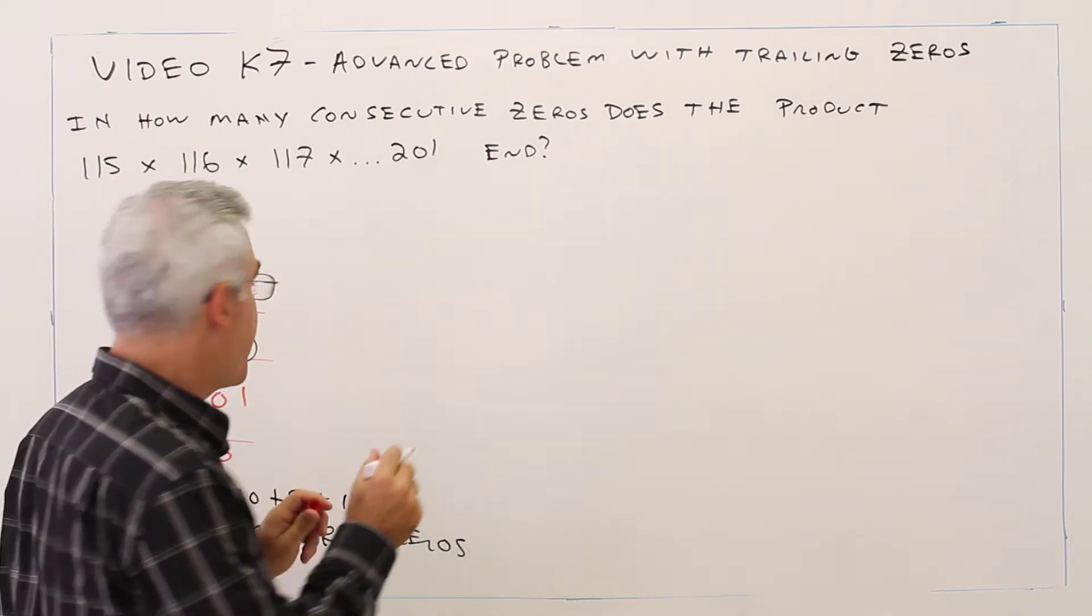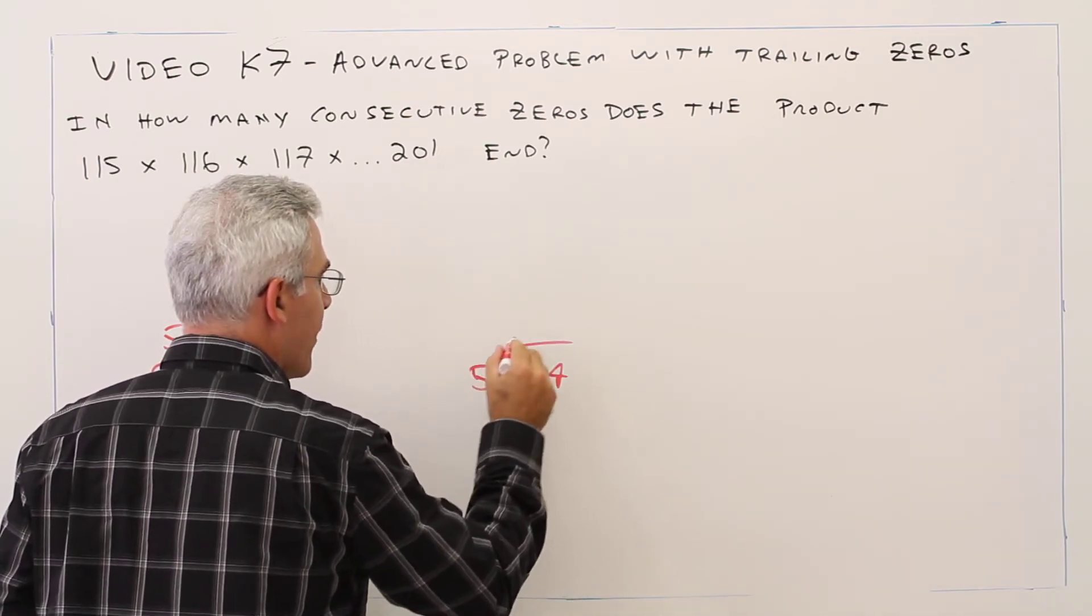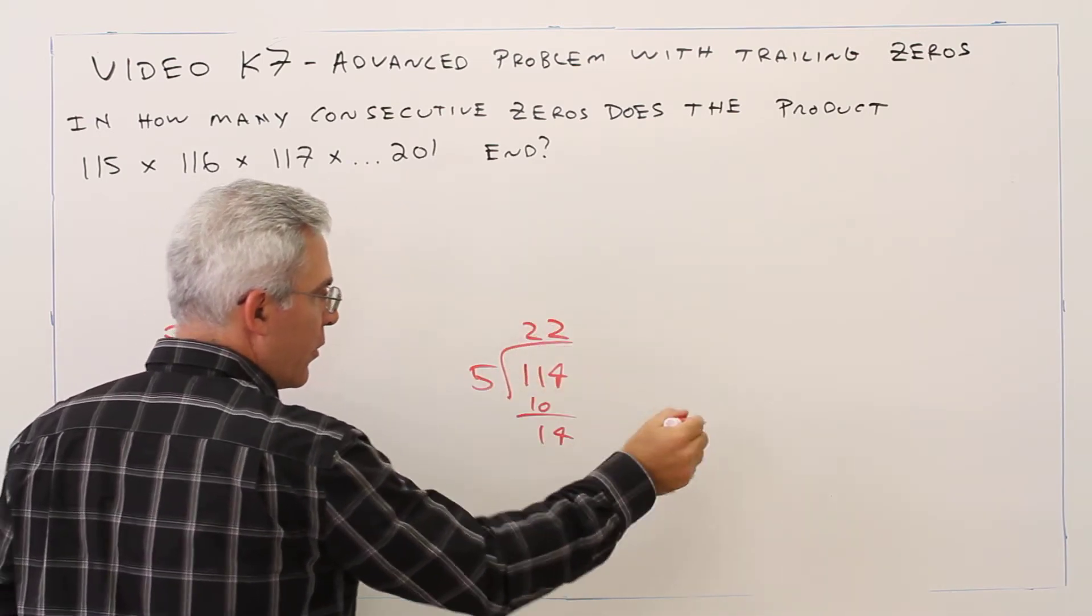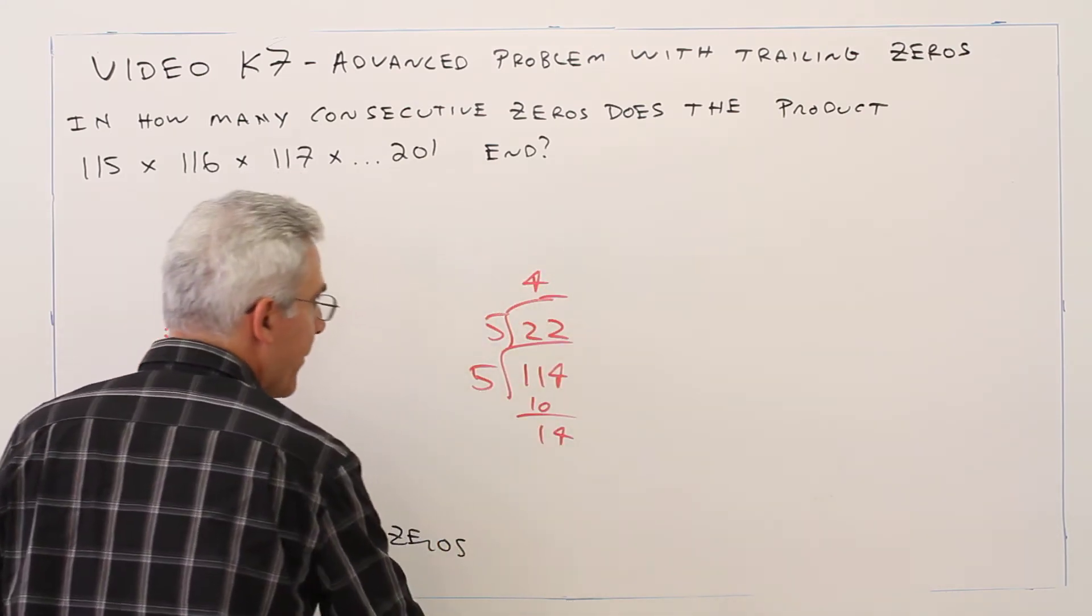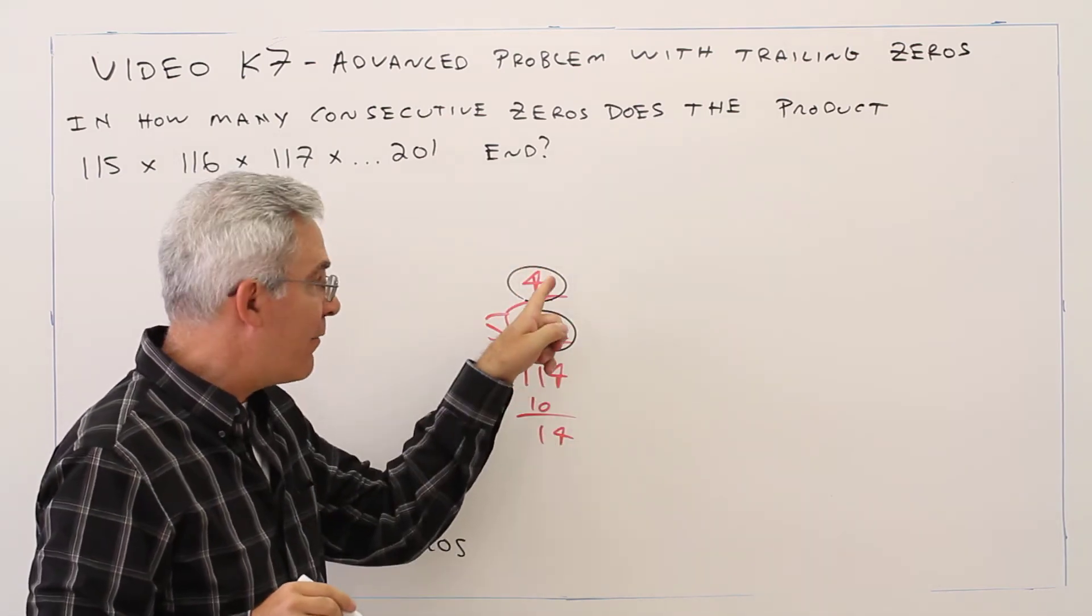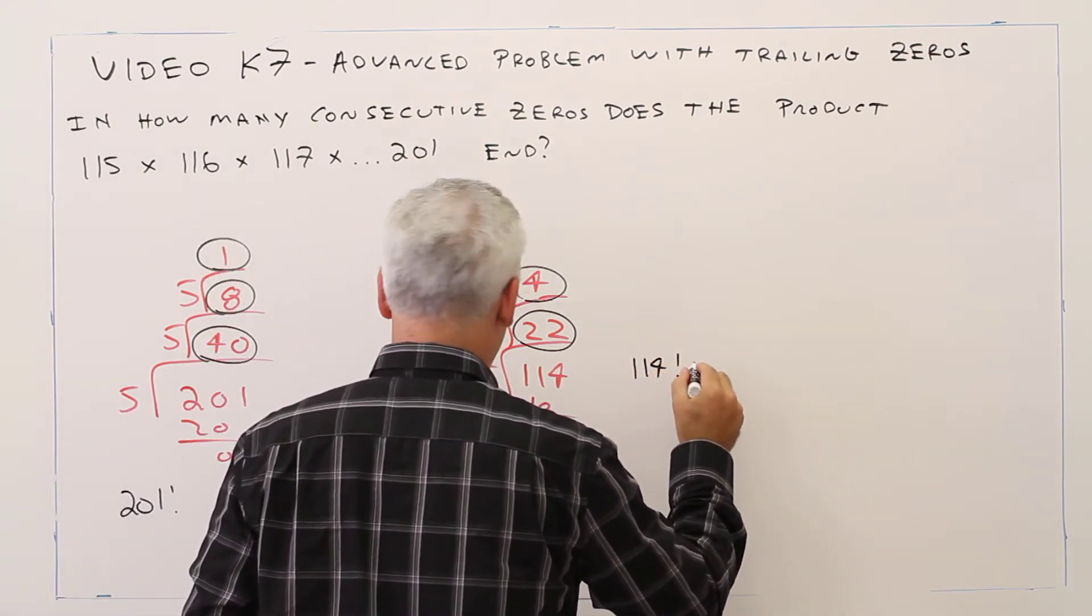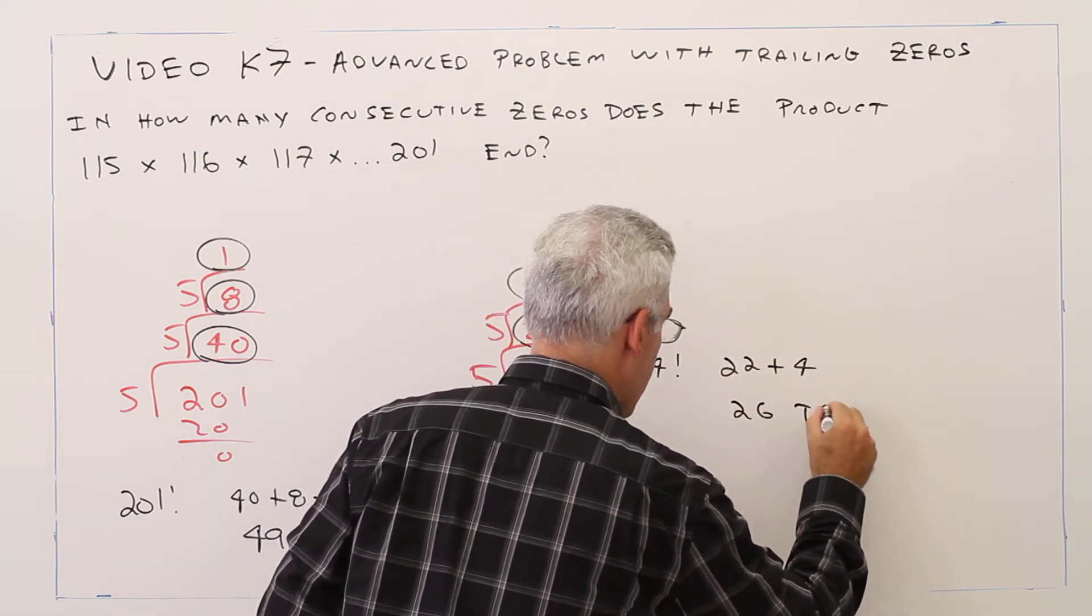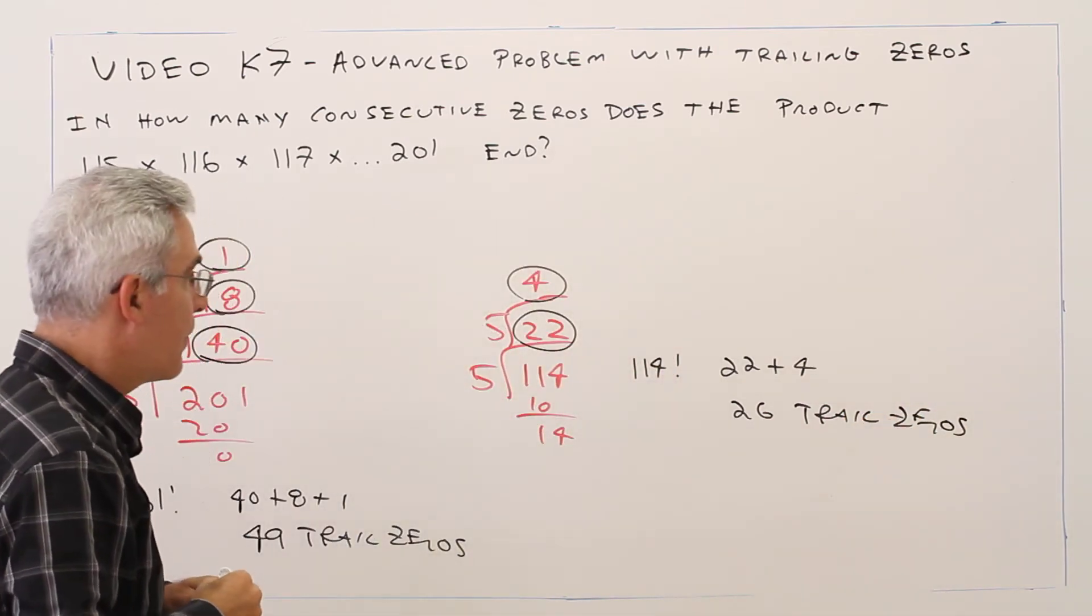So it was the 114. Divide by 5: 22 remainder 4. Divide by 5: 4, so I stopped. So again, this is the factors of 5, the factors of 25. So 114 factorial has 22 + 4, which is 26 trailing zeros.